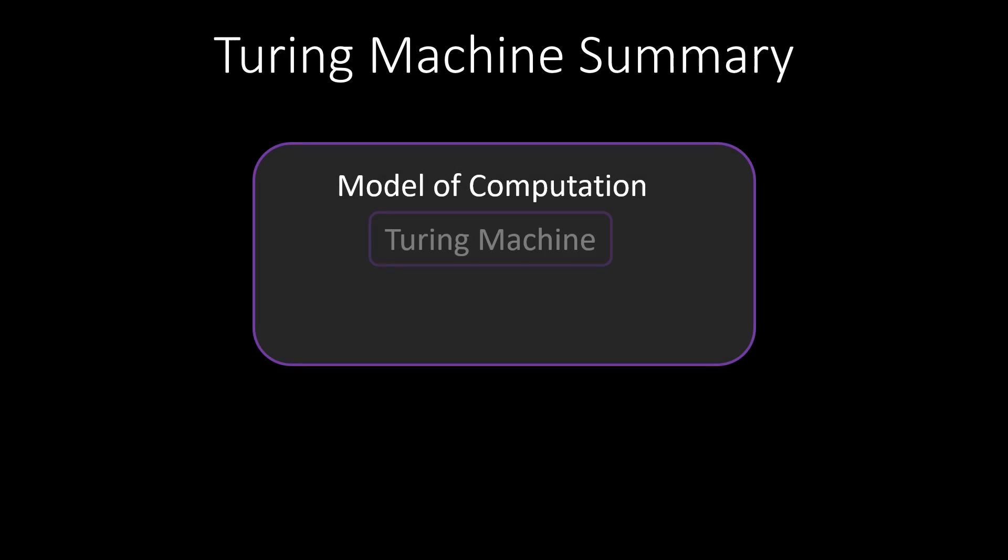Let's summarize this video. We can use a model of computation, like for example a Turing machine, to do computations like with real computers. A Turing machine consists of different building blocks. We have states and transitions that define the actual program, and a memory tape with a pointer to read or store values.